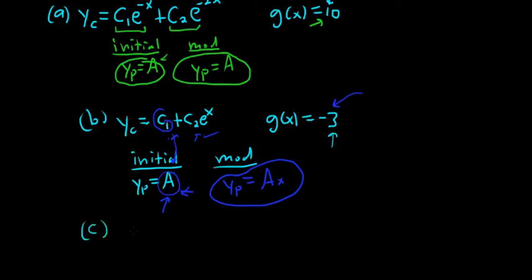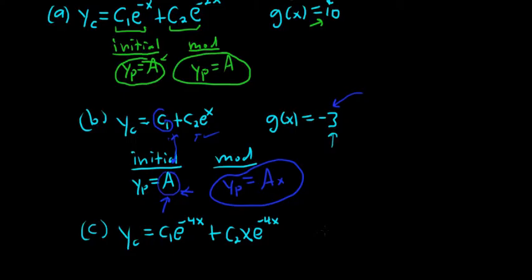Example C. Yc is equal to C1 e to the negative 4x plus C2 x e to the negative 4x — that's our complementary function. And here we have g of x, the right-hand side of our differential equation: 9 plus e to the negative 4x.